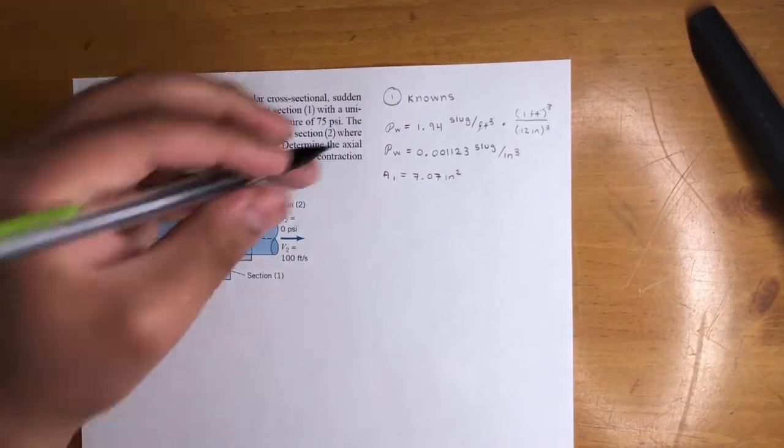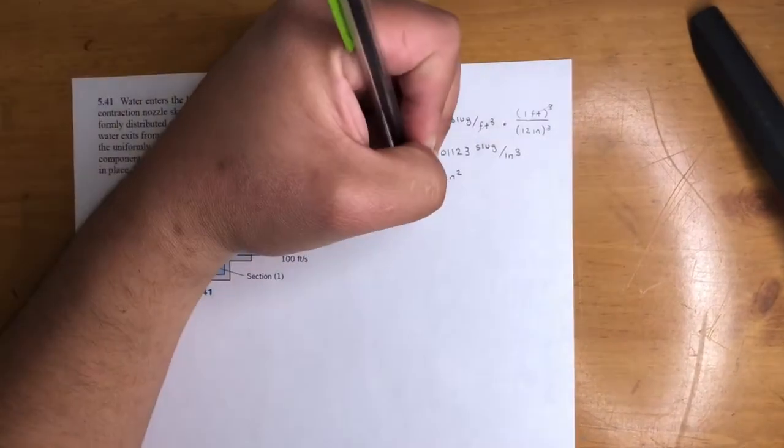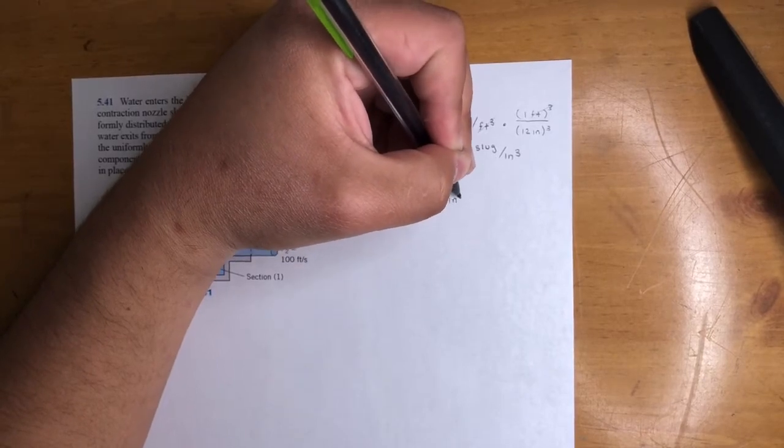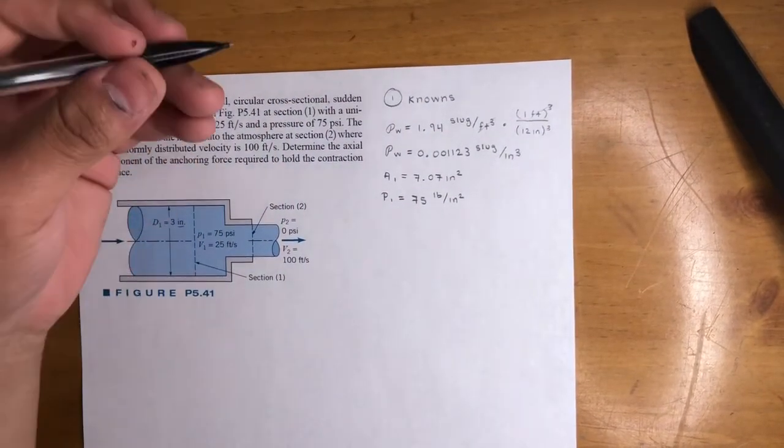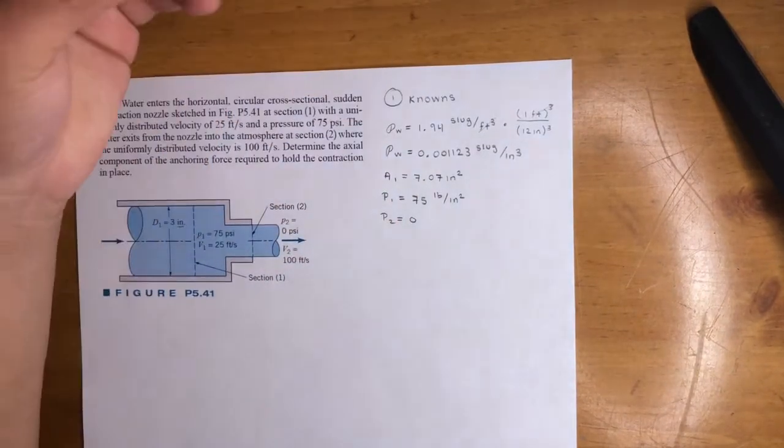They give us pressure at point 1. That is 75 pounds per inch squared psi. They give us P2, that's atmospheric pressure. That's just zero. So that's easy.